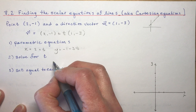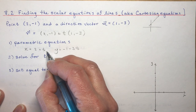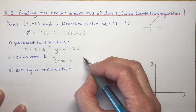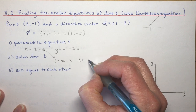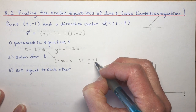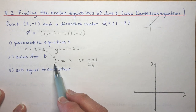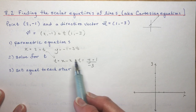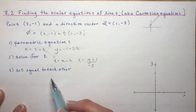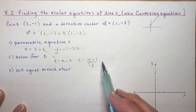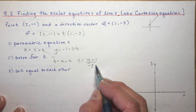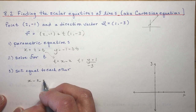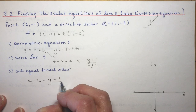To solve for t: from x equals 2 plus t, we get t equals x minus 2. From the y equation I'd say t equals (y plus 1) divided by minus 3. So I have t equal to each expression, which means I can set them equal to each other — just like saying if 4 equals 2 plus 2 and 4 equals 3 plus 1, then 2 plus 2 equals 3 plus 1. So x minus 2 equals (y plus 1) over minus 3.